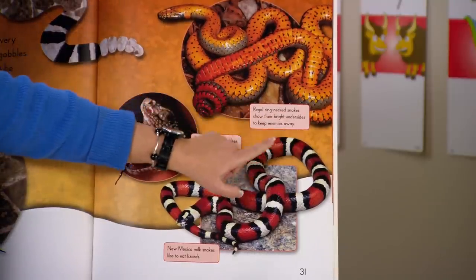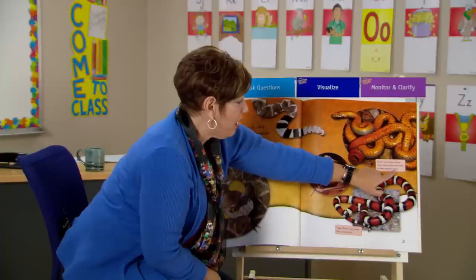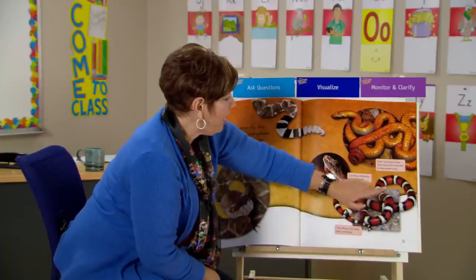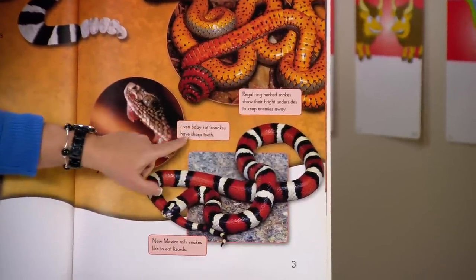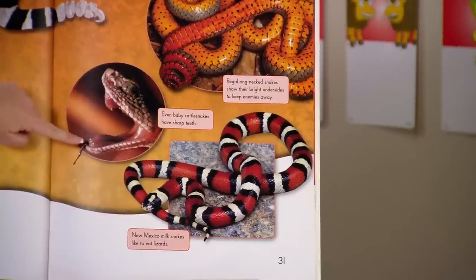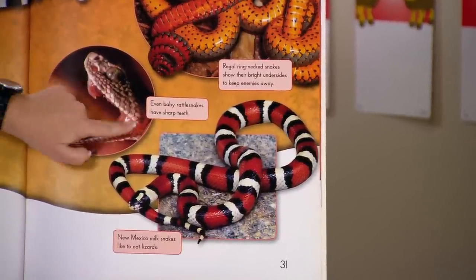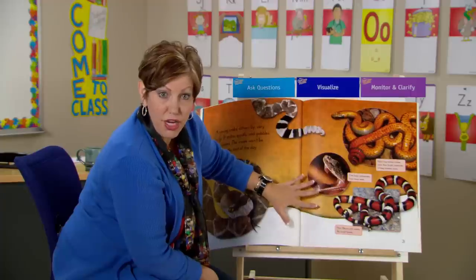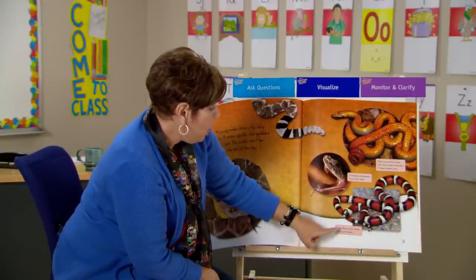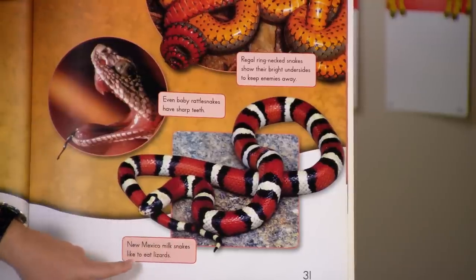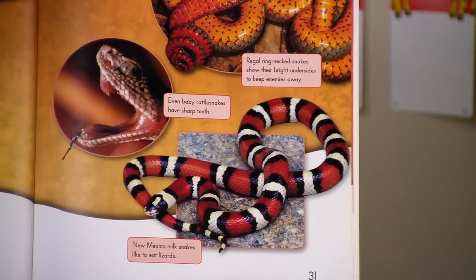Regal ring-necked snakes show their bright undersides to keep enemies away. Interesting — they have bright undersides. Even baby rattlesnakes have sharp teeth. Look at that image — this text gives us a lot of information. This is magnificent. New Mexico milk snakes like to eat lizards — so these milk snakes actually like to eat lizards.